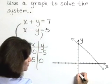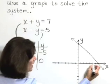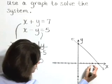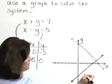So this line has a Y intercept at zero, negative five. An X intercept at five, zero. Let's connect those points with a straight line and extend it.